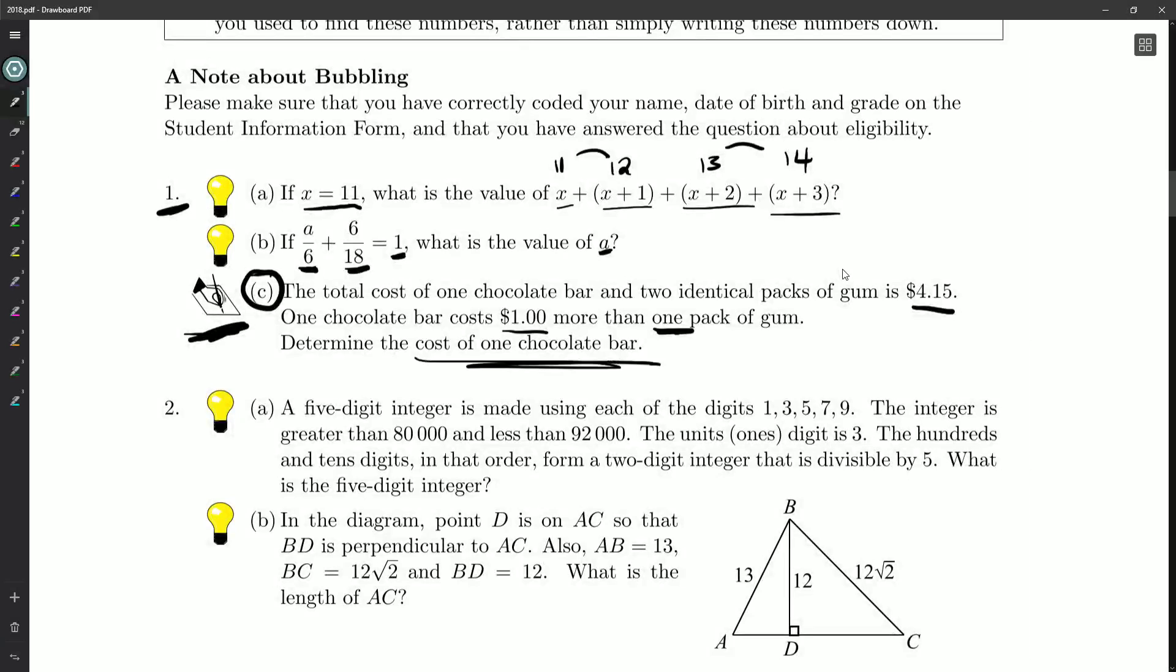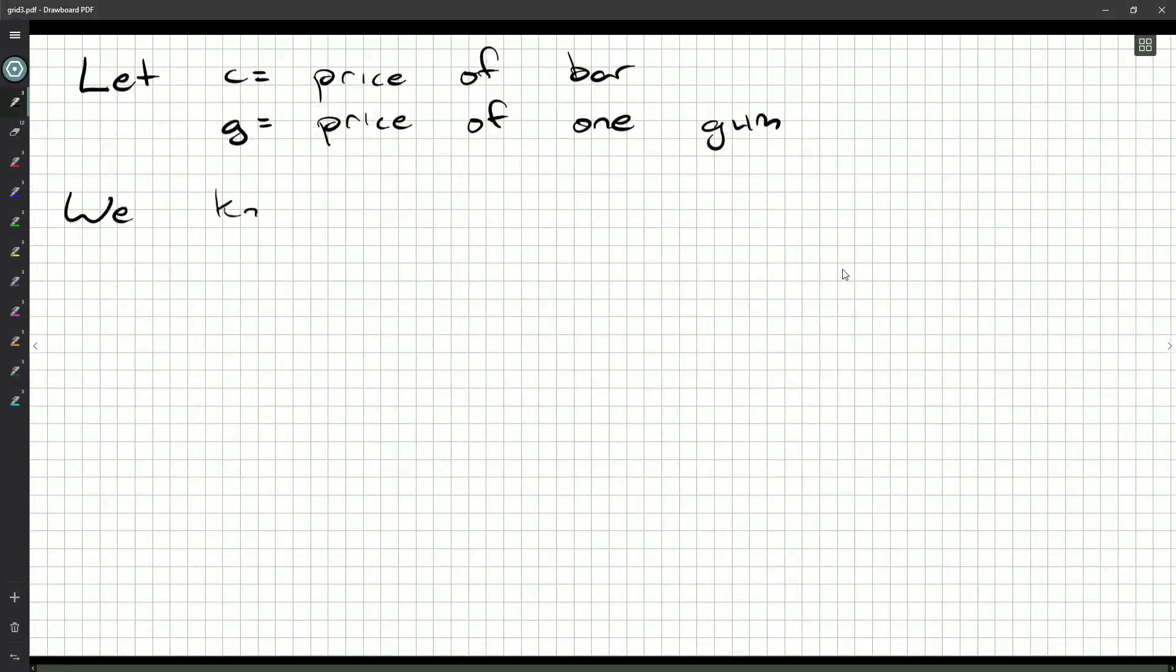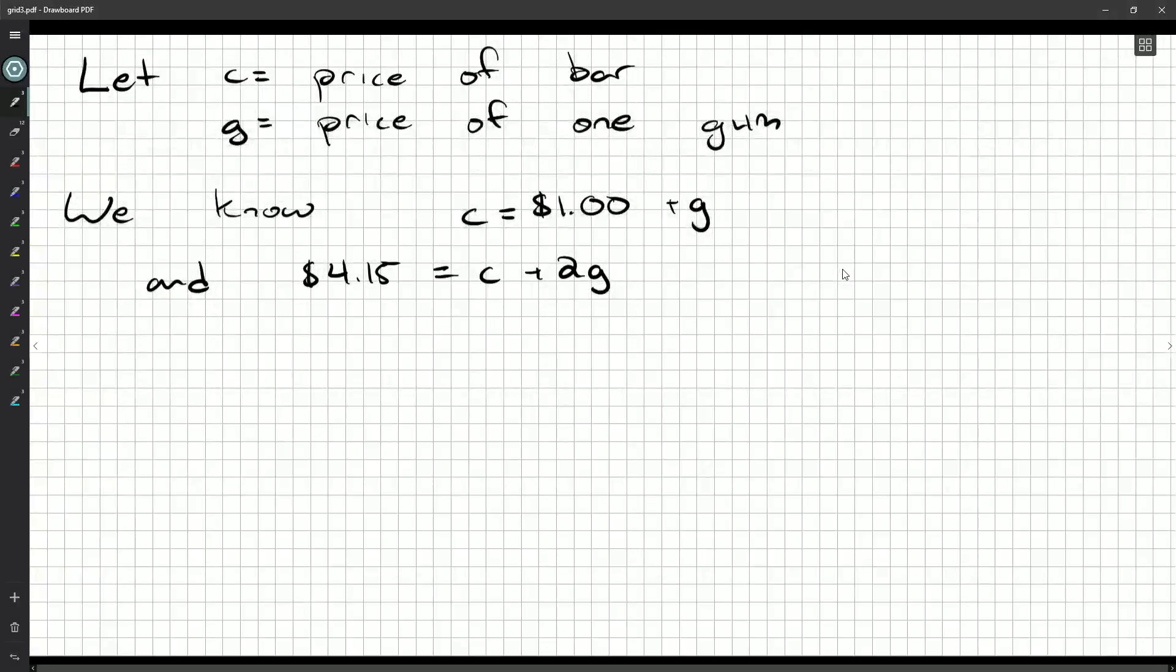Now we know two things: the cost of one chocolate bar and two packs of gum, and we know one chocolate bar costs more than one pack of gum. So we know c is one dollar more than one pack of gum: c = g + 1. And $4.15 = c + 2g. We have an expression for c—we might call this equation 1 and this equation 2—and we'll sub 1 into 2.